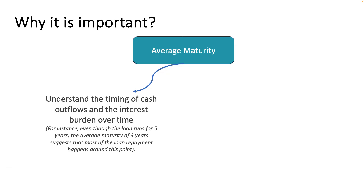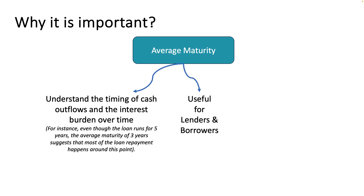Why is understanding average maturity important? Number one, it helps in understanding the timing of cash outflows from the borrower's point of view and cash inflows from the lender's point of view, and it helps to understand the interest outflow or inflow. For example, if the loan runs for 5 years and the average maturity is 3 years, it means most of the loan payment — at least 50% — is going to happen within the first 3 years.